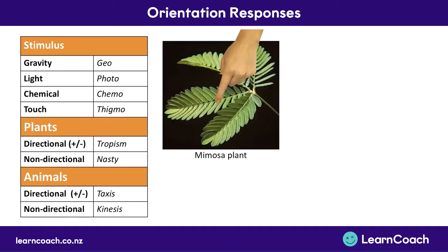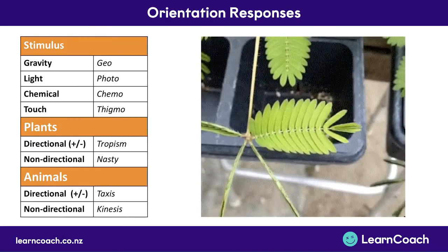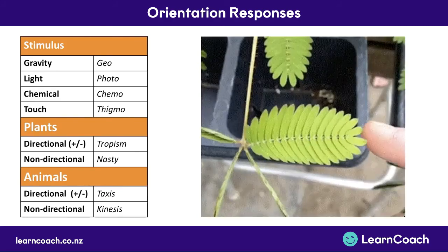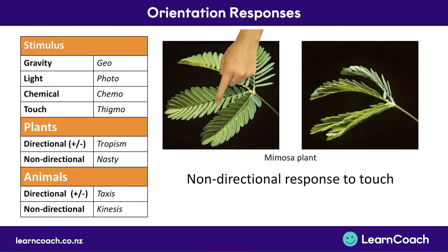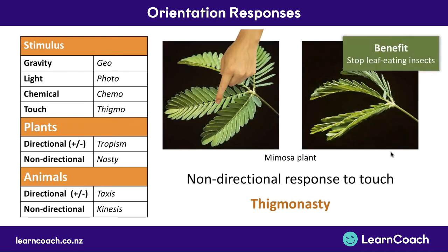It's not the only plant that responds to touch — there's also the mimosa plant. If you touch a mimosa plant, all the leaves close up tightly. This is again a non-directional response to touch, so it's also called thigmonasty. The benefit here is that if a leaf-eating insect lands on the leaves, they close up and it becomes much harder for the plant to be eaten. These are all nastic responses — non-directional responses of plants.